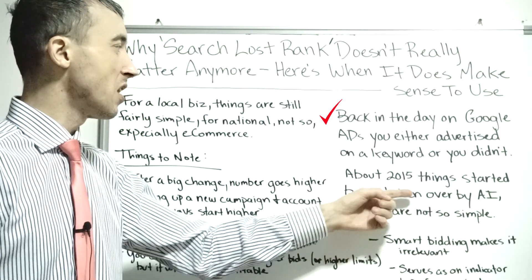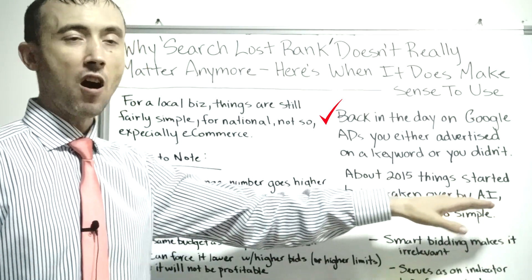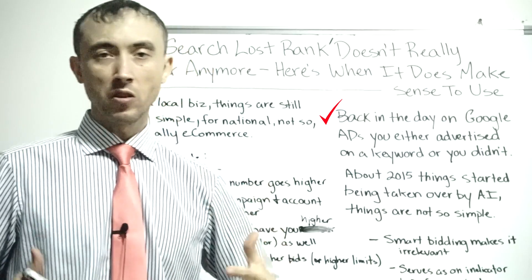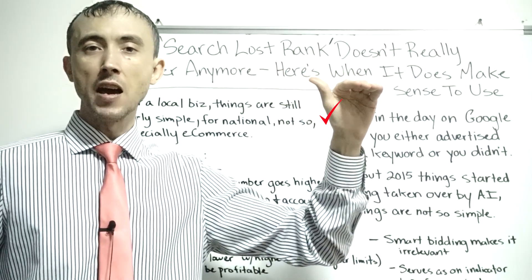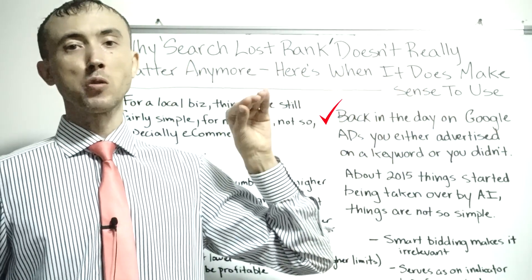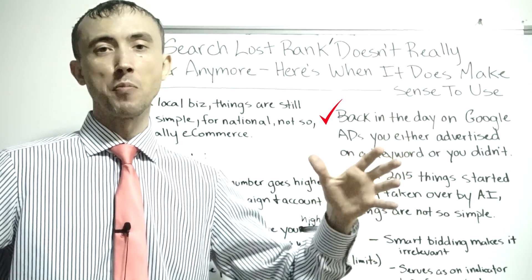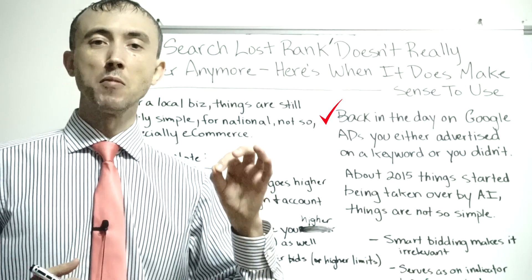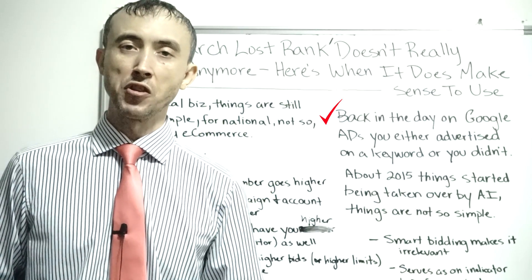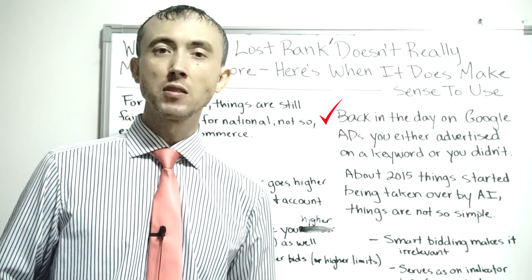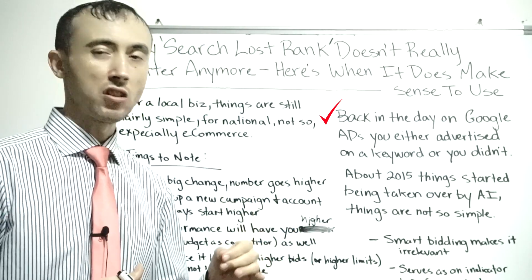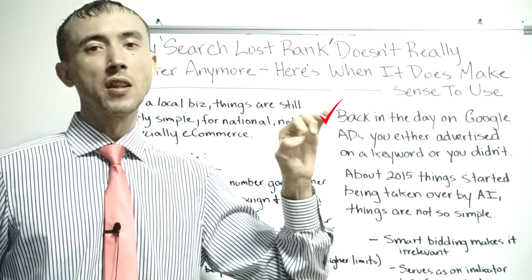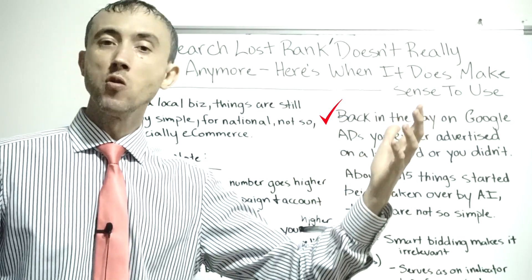Things evolved over time. Since about 2015, AI has started taking over, so things aren't so simple anymore. If you're selling red shoes, you think you want to show up all the time, but you necessarily don't to make the most profit. If you want novelty sales and rack up gross revenue for bragging rights, go ahead and try to show up at the top all the time. But if you want the most actual profit, you want to show up as much as possible when it counts. Google takes that keyword 'red shoes' and sub-segments it thousands, maybe millions, of times.